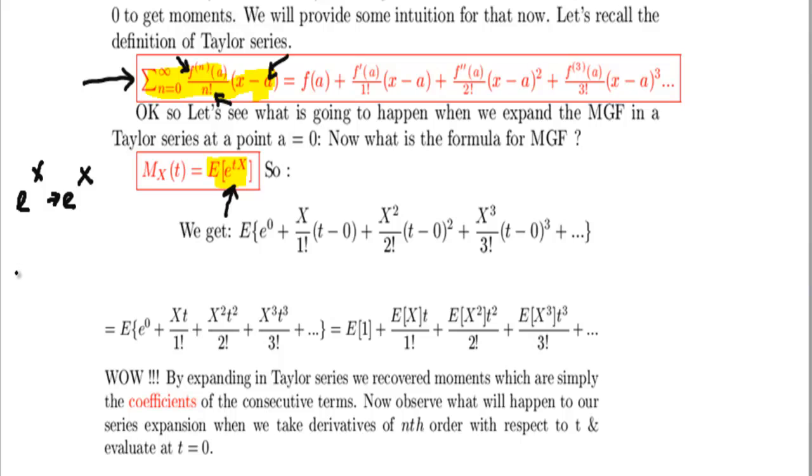You should know by now that any derivative of e to the x is just going to be e to the x. Now, if on top of this I tell you that take derivatives of e to x and then evaluate at x equals zero, well guess what, you will always get e to zero, i.e. you will always get one. Let's not get confused here, our variable is t, it's not x.